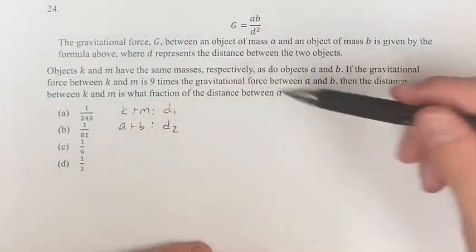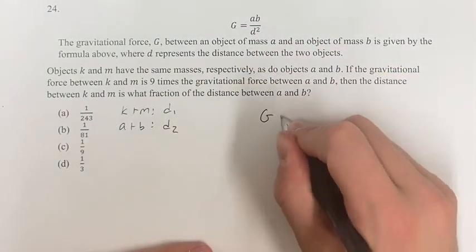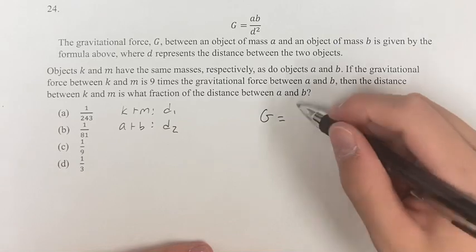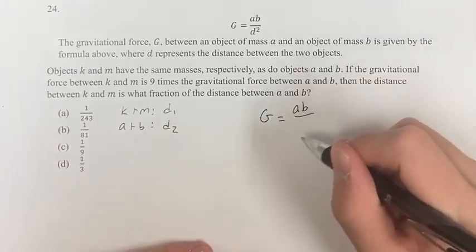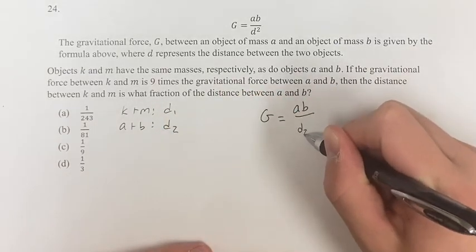So the gravitational force G for A and B is equal to AB divided by D, which is D2 squared.